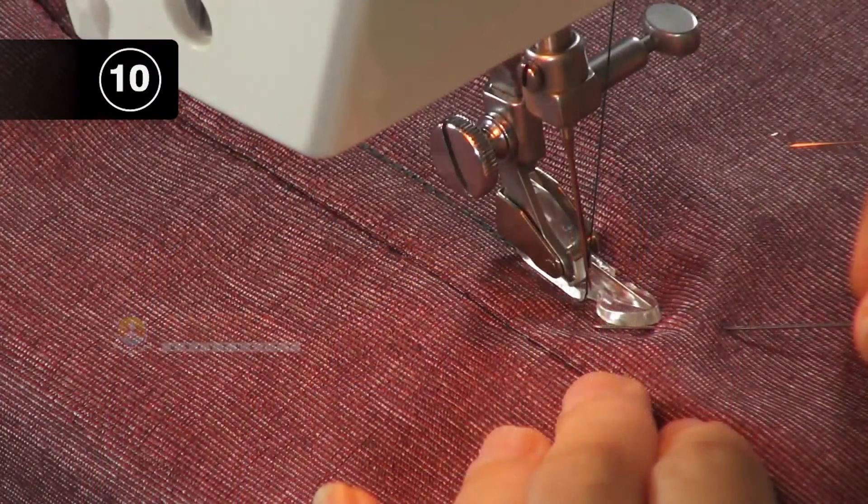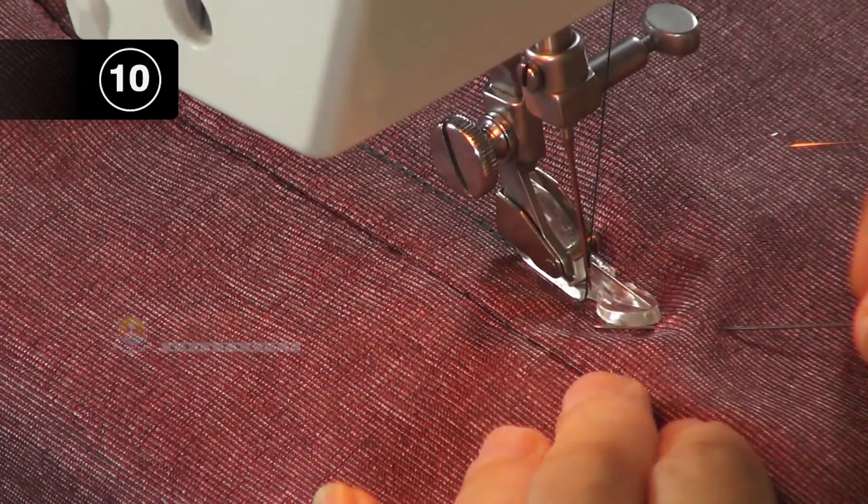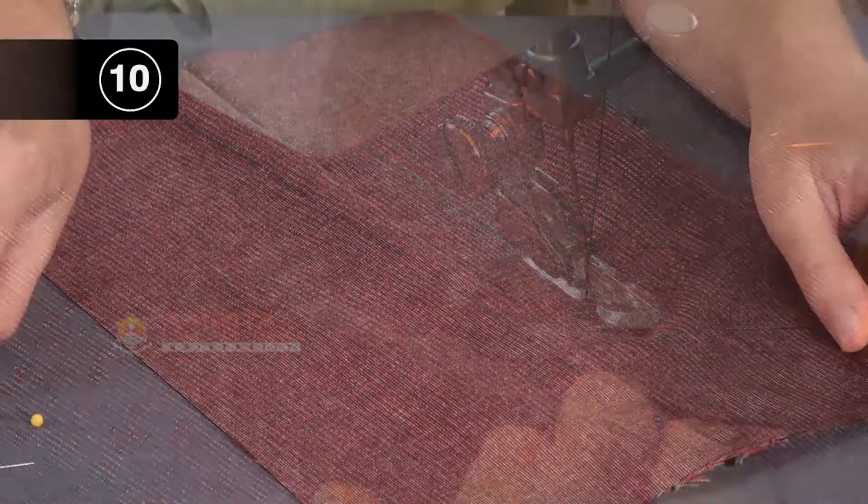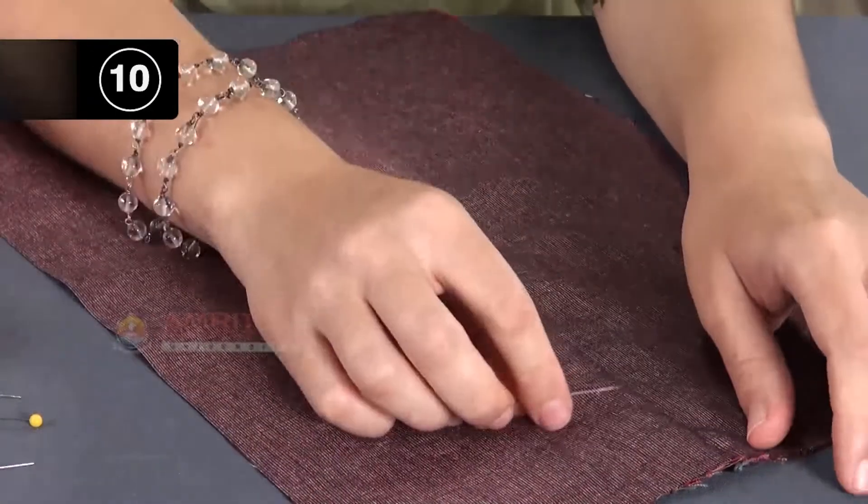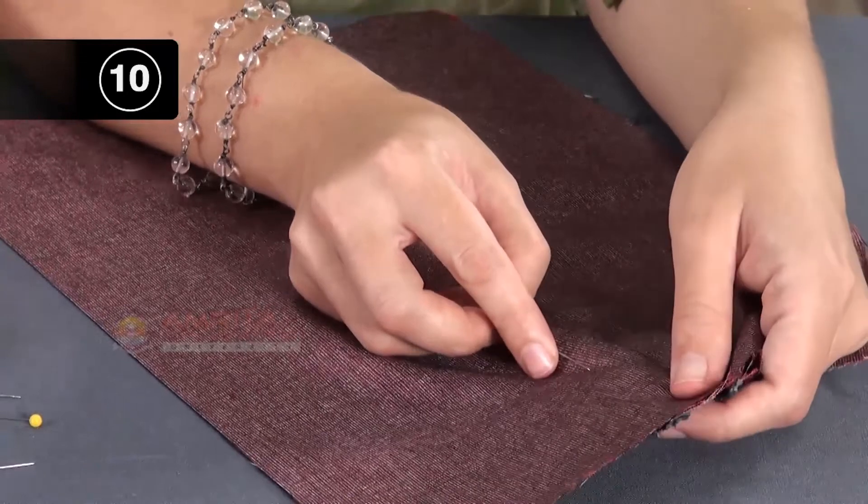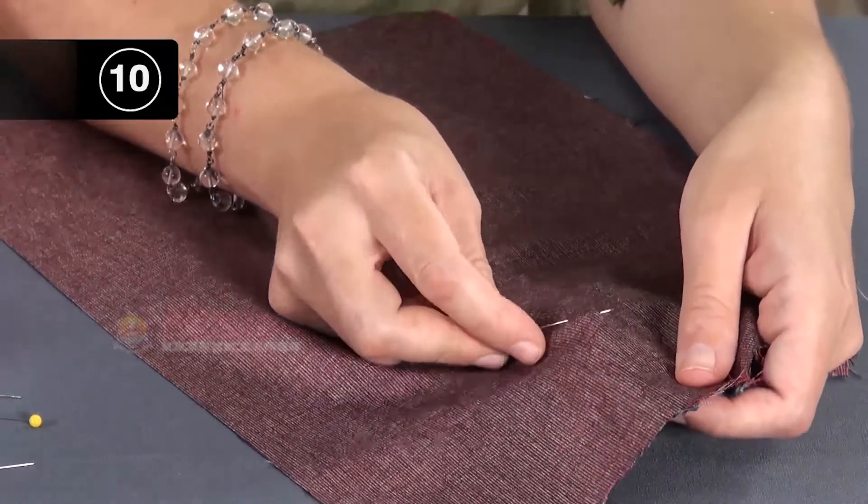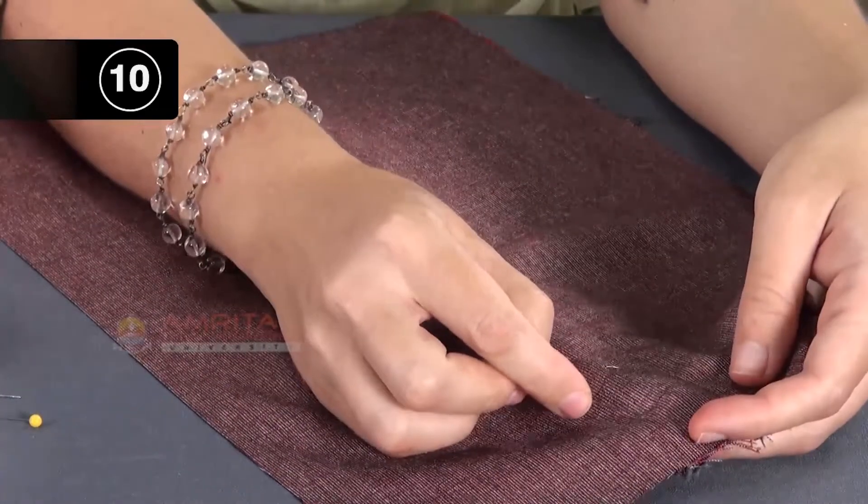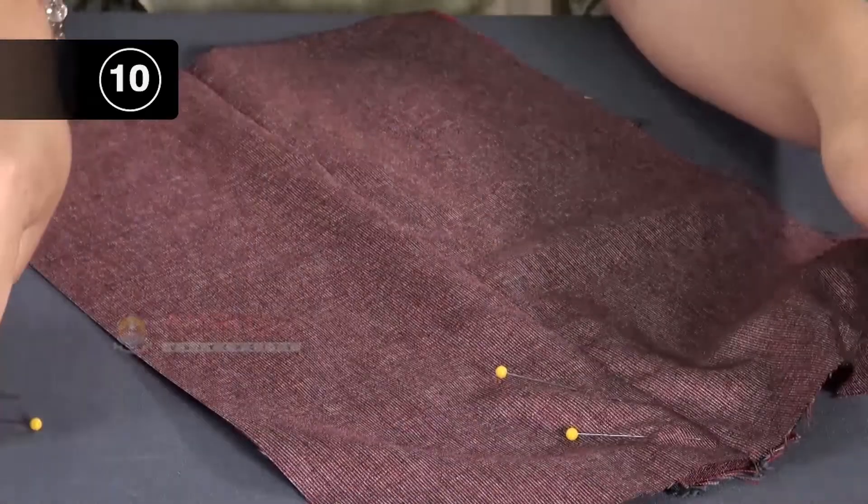Step 10: Top-stitch the zipper from the outside. Turn the garment to the right side and pin the leftover seam allowance and zipper tape to the outer fabric and mark the length of zipper.